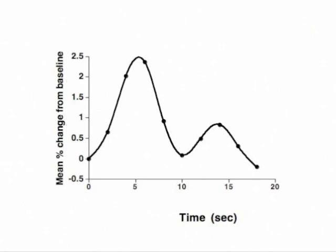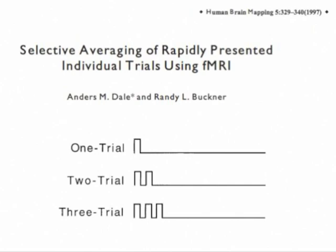An early study in the 1990s that looked at this question was performed by Anders Dale and Randy Buckner. The methods they used will also be featured in chapter 11 while discussing the encoding of information into long-term memory. In this particular experiment, the task was simple visual perception of a flickering checkerboard presented in three conditions. The one-trial condition was just one second of visual stimulation. The two-trial condition had a second of visual stimulation followed by a second of fixation, then a second second-long pulse of visual stimulation. The three-trial condition had three visual stimulation events separated by two fixation events.